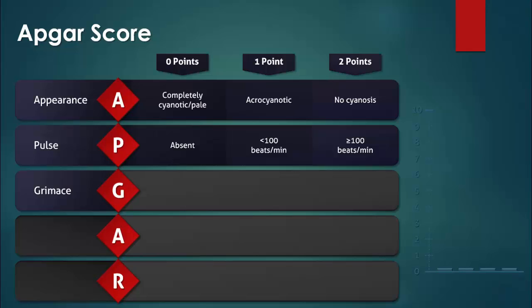G stands for grimace and it refers to the level of response to a noxious stimulus. The process of drying the baby may provide sufficient stimuli, or alternatively, a small catheter may be placed in the nares. Zero points are given if there is no response. One point is given if the response is minimal. Two points are given if the baby responds with a cry or active movement.